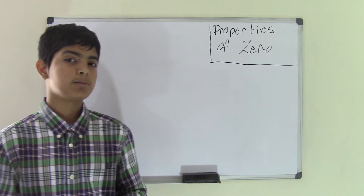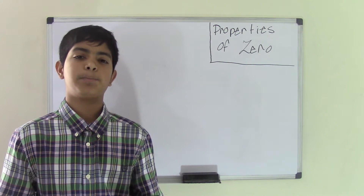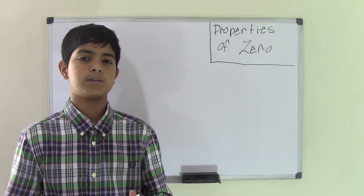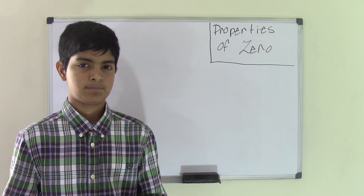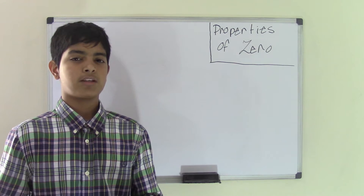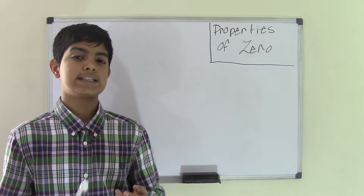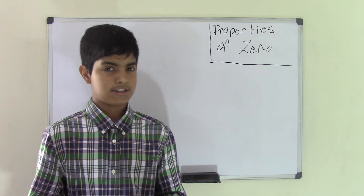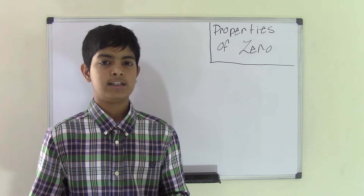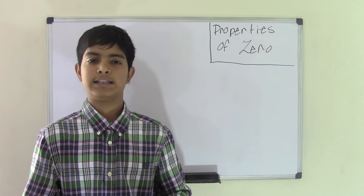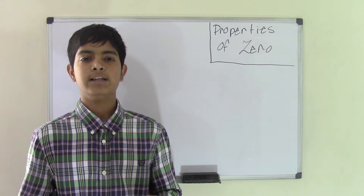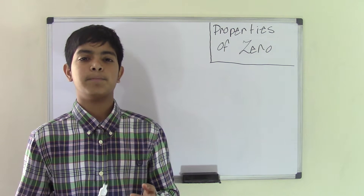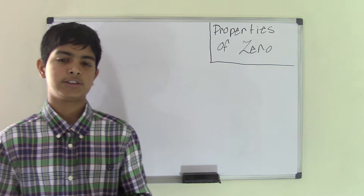Today I'm going to be discussing with you the three properties of zero. The first property is about addition. The property states that if you are to add any number by zero, you are to get the same number as the sum. And the same goes for adding zero by any number.